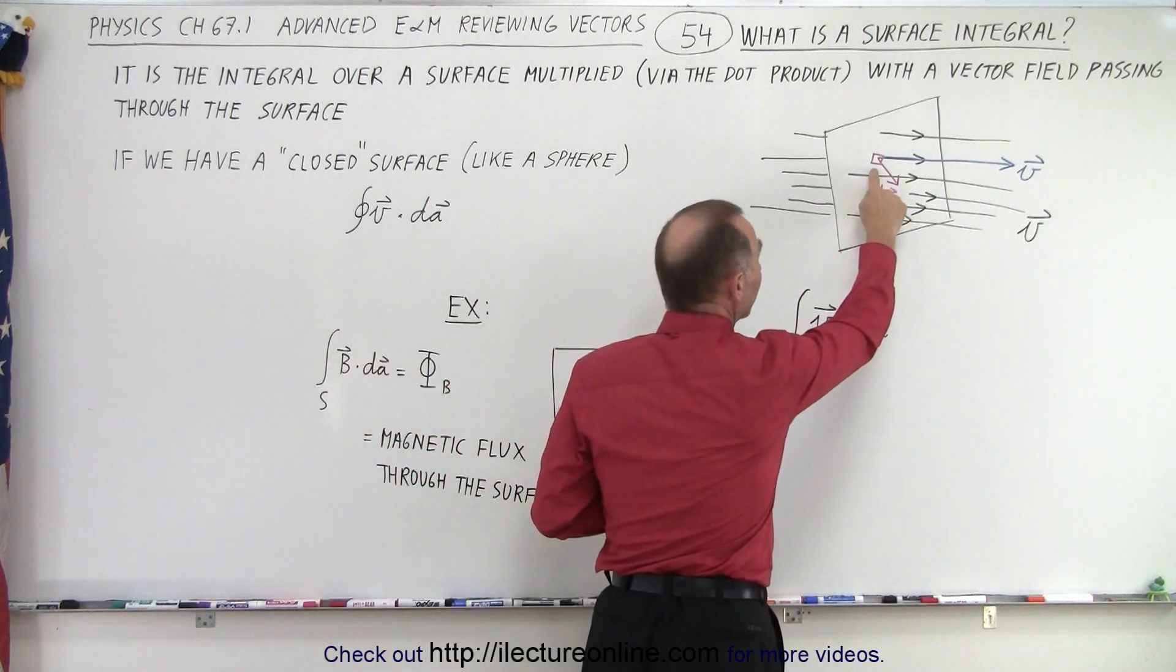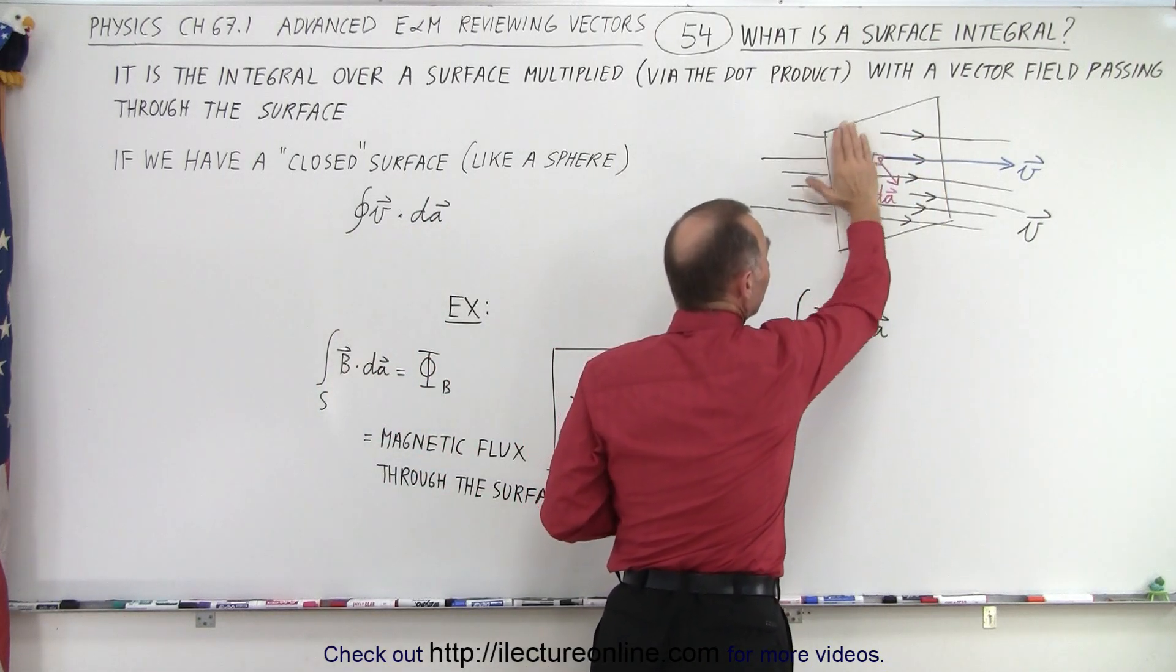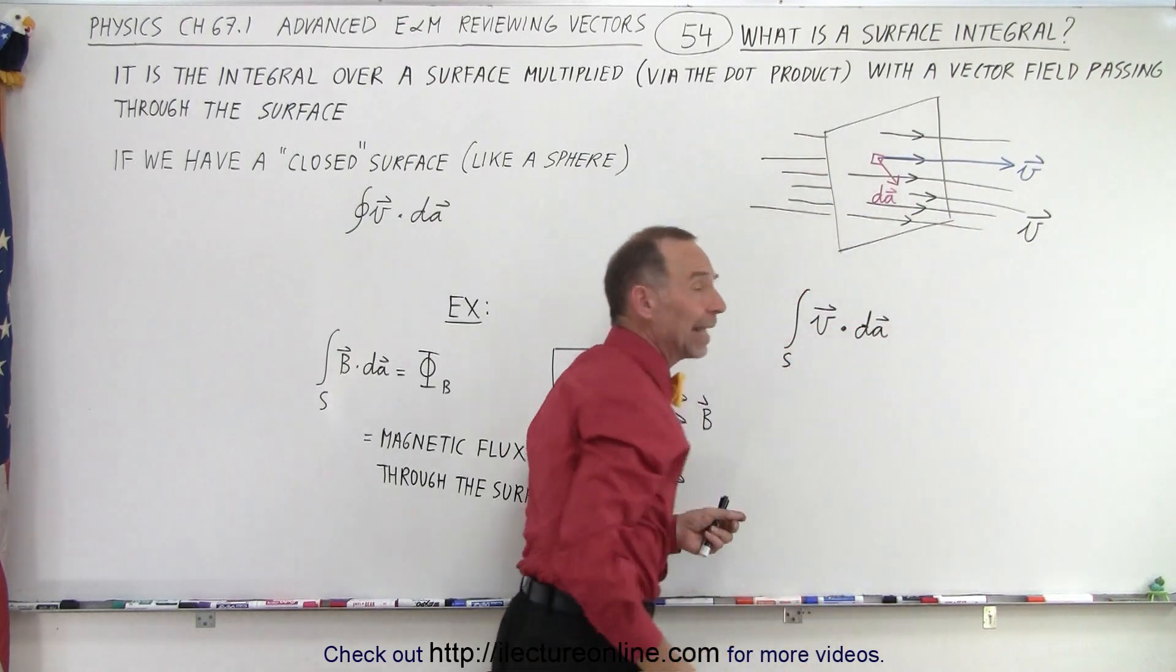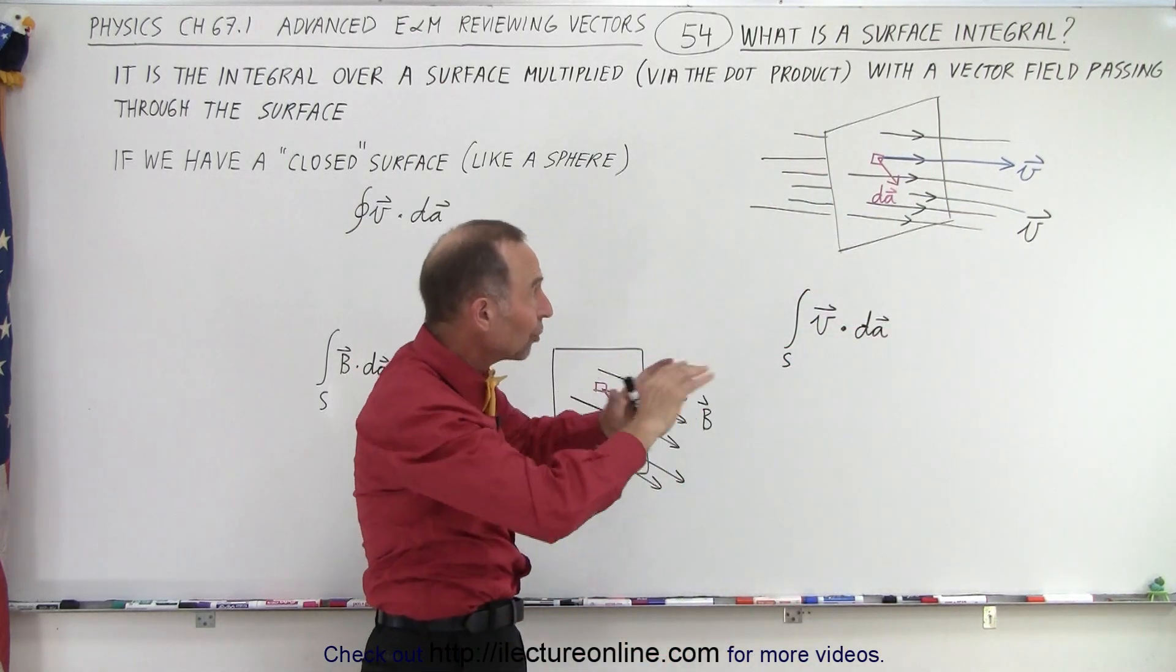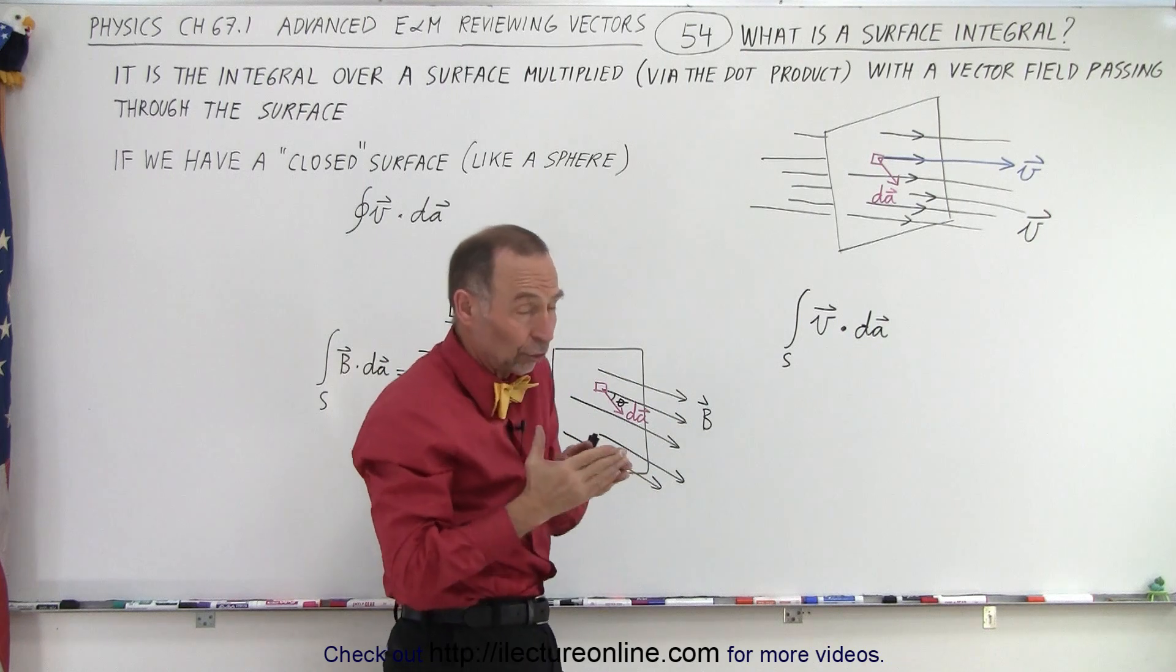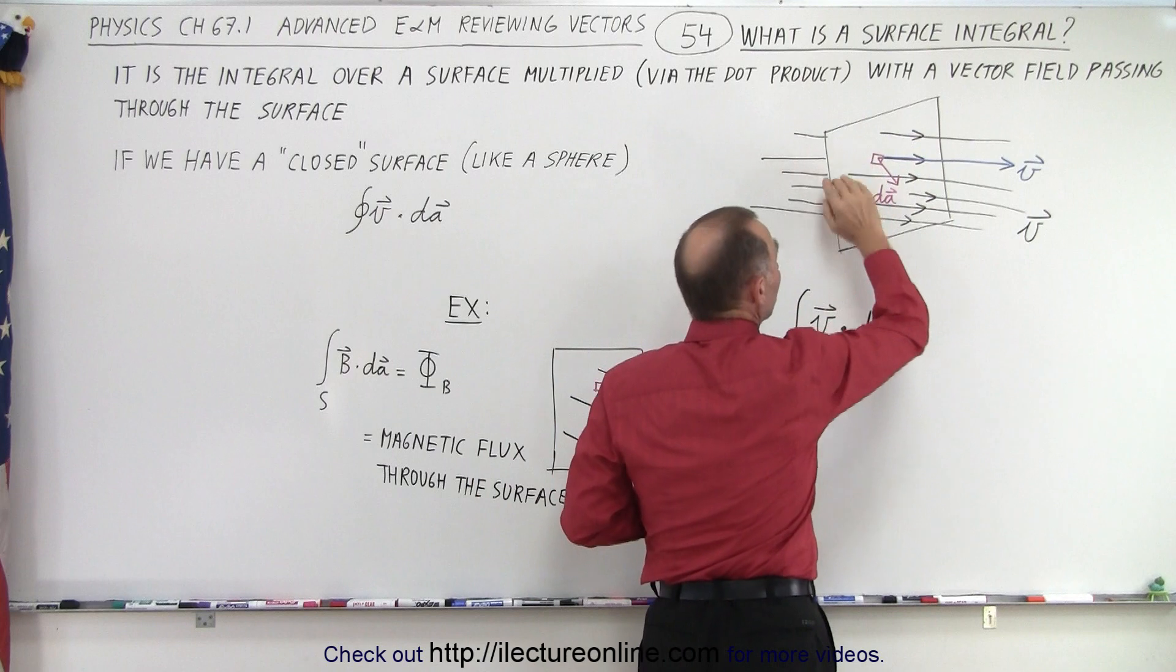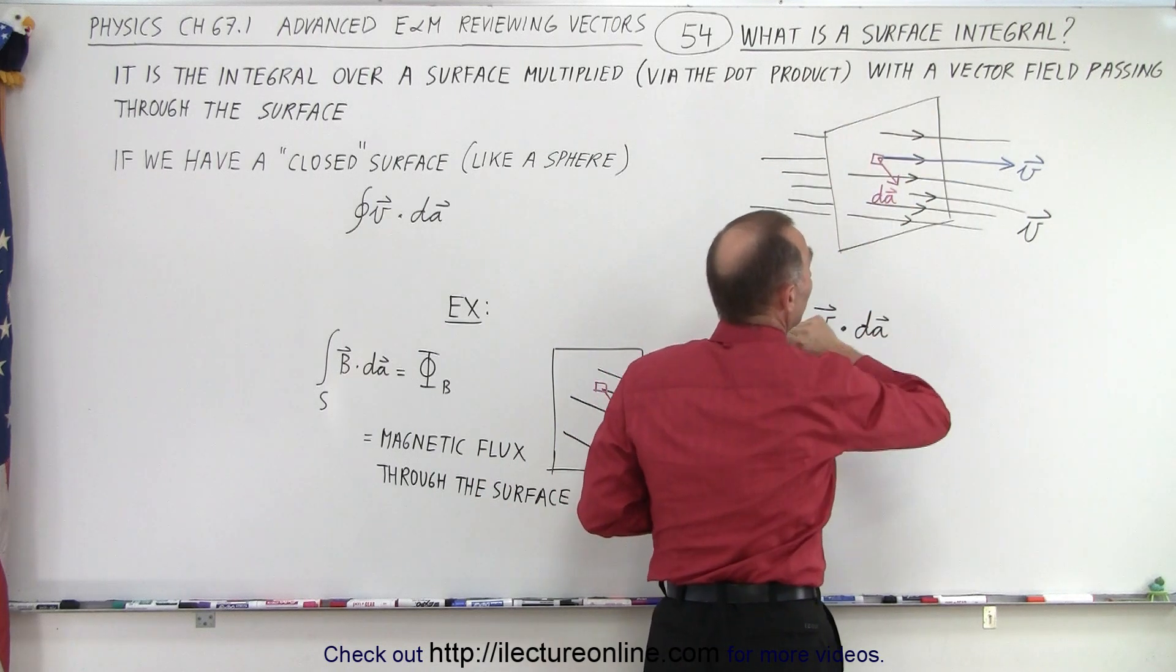So let's say we have a small area element which is parallel to the surface and through which a vector field emanates. It's a vector field that has a certain direction and magnitude. The direction can change, the magnitude can change depending upon where on the surface we are.